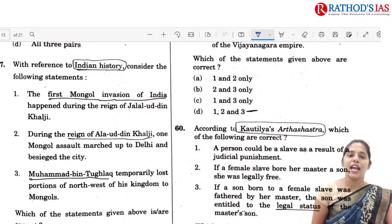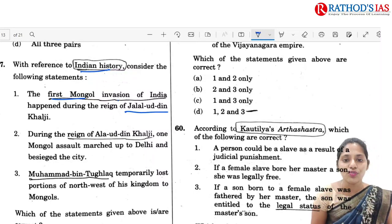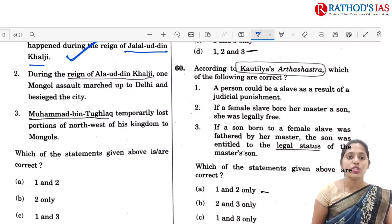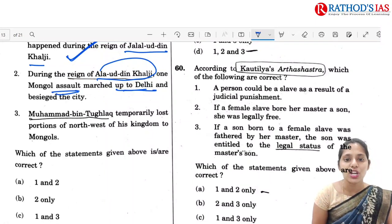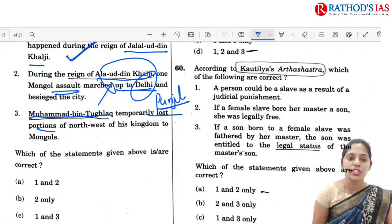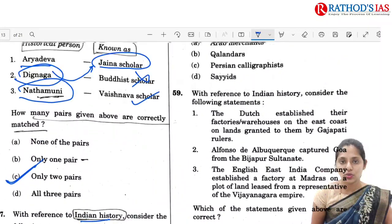Q57 is with reference to Indian history and Mongol invasions. The first Mongol invasion of India happened during the reign of Jalaluddin Khilji — this statement is correct. During the reign of Alauddin Khilji, one Mongol assault marched toward Delhi but was stopped at Punjab itself — so that statement is incorrect. Muhammad bin Tughlaq temporarily lost portions of the northwest of his kingdom to the Mongols — this is correct. Correct option is C: 1 and 3.